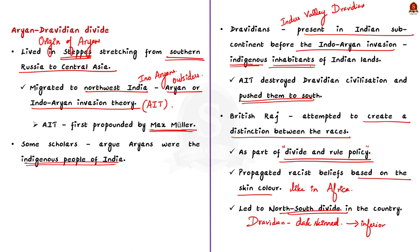Under this divide, southern Indians were called the dark-skinned descendants of a destroyed Indus Valley civilization, while north Indians were the lighter-skinned descendants of Vedic civilization. That is all about the Aryan-Dravidian divide - let us move on to the next article discussion.